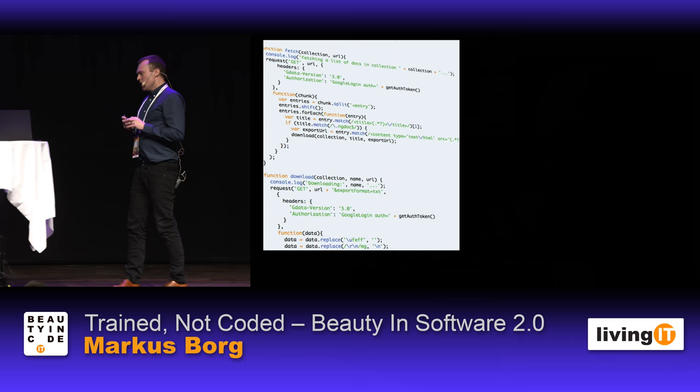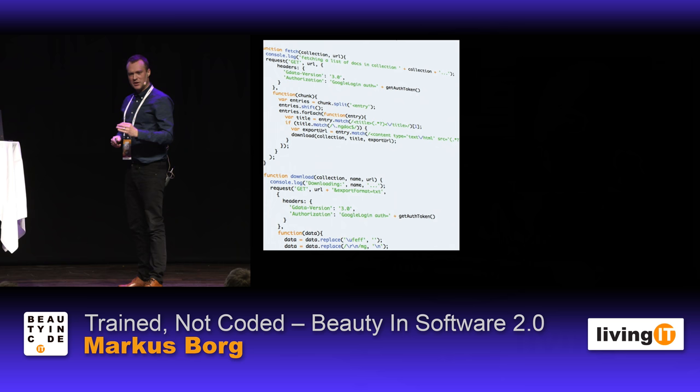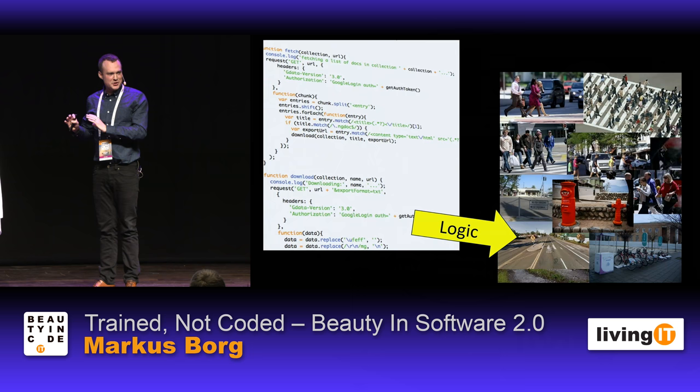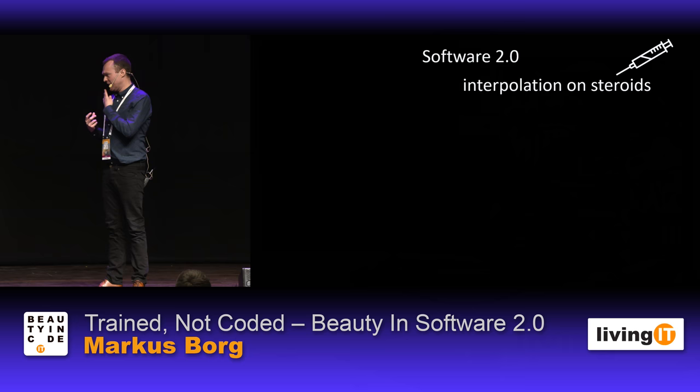But what happens now with software 2.0? In first-generation software, source code explicitly states what is going on — all the logic is there, written by developers. Now you let go of some of that control, and some of the inferential logic will instead reside in the training data. I like to consider software 2.0 as interpolation on steroids — that is really what is happening.